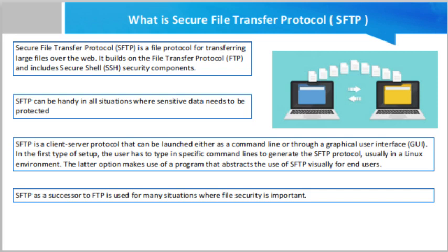SFTP is a successor to FTP and is used in many situations where file security is important. One of the biggest use cases is compliance with standards like the federal Health Insurance Portability and Accountability Act, which governs protected health information. Any business, even a third party working with a hospital or healthcare provider, must keep its PHI confidential during transmission through networks in digital packet form. That's why SFTP is useful in securing this type of data.